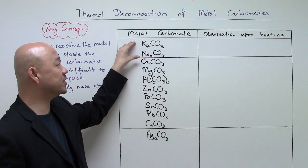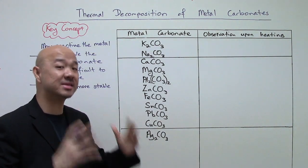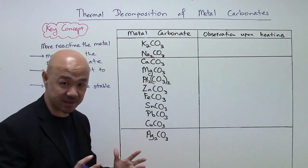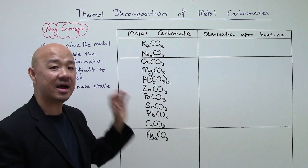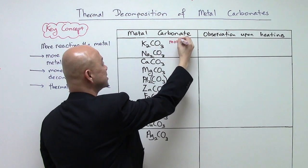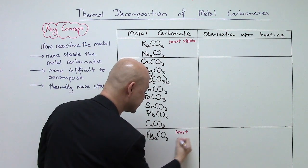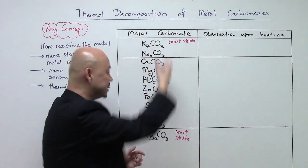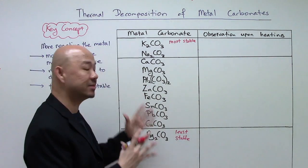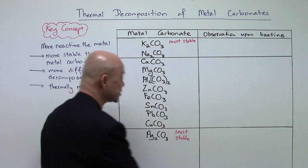For the first two metal carbonates, they consist of your Group 1 alkali metals — potassium and sodium — which are highly reactive metals. This means these carbonates are very, very stable. Potassium carbonate is therefore the most stable metal carbonate, and silver carbonate is the least stable. The thermal stability of the carbonate decreases down this list.